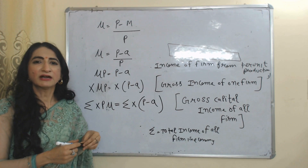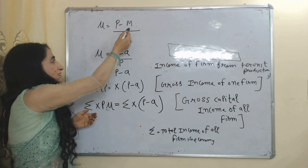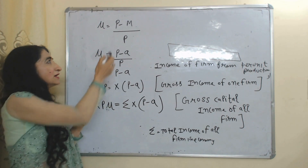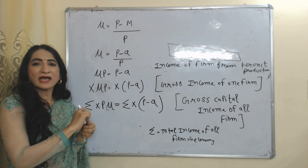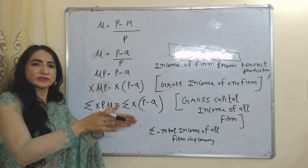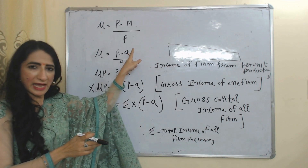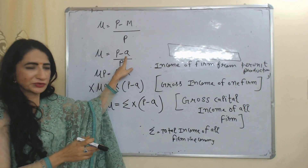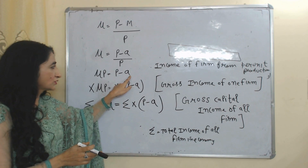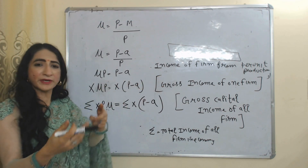This theory is based on the degree of monopoly power. The formula for calculating the degree of monopoly power is (P minus M) over P, where mu represents the degree of monopoly power, P represents price, and M represents marginal cost. In this theory, we assume marginal cost is equal to average cost, so we replace M with A. When we subtract average cost from price, it becomes equal to the income of the firm per unit of production.